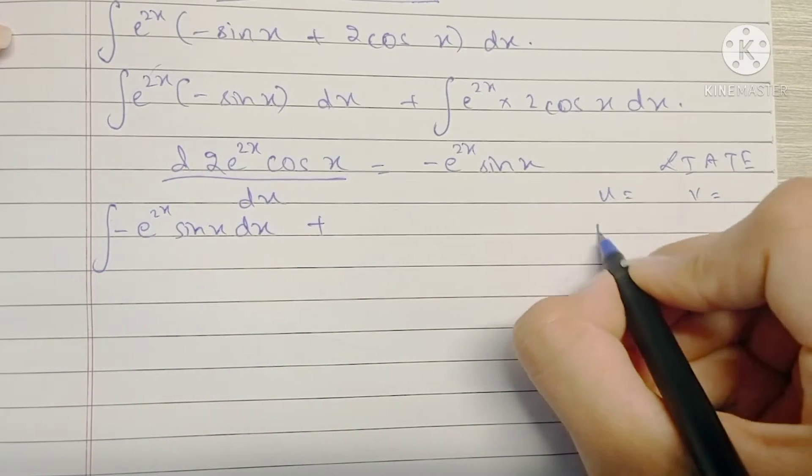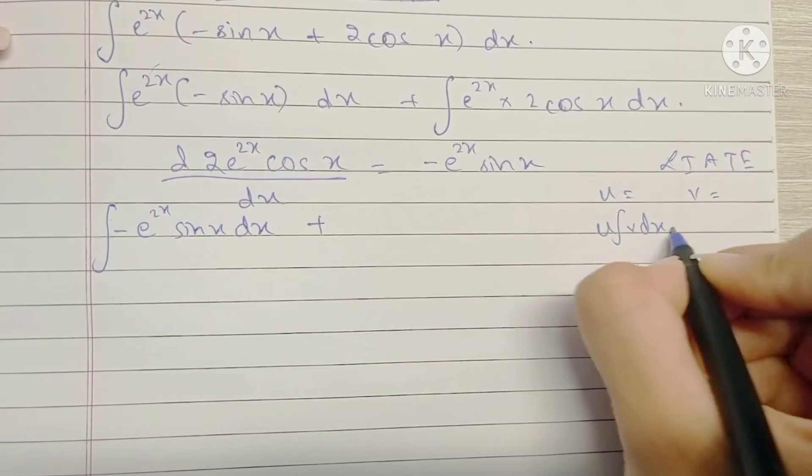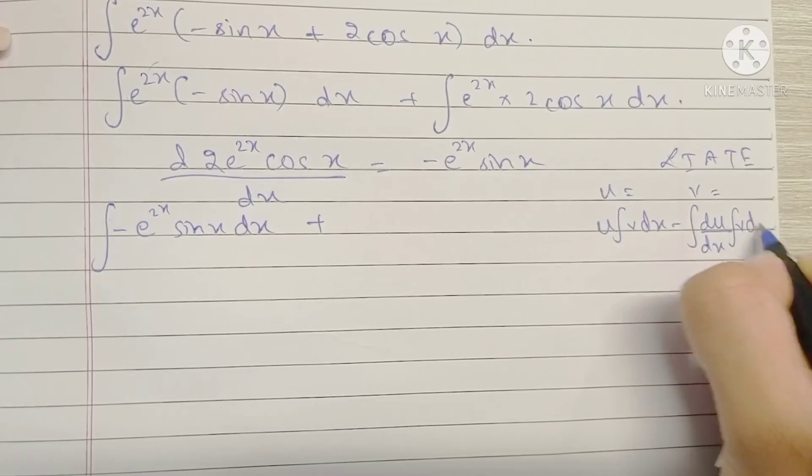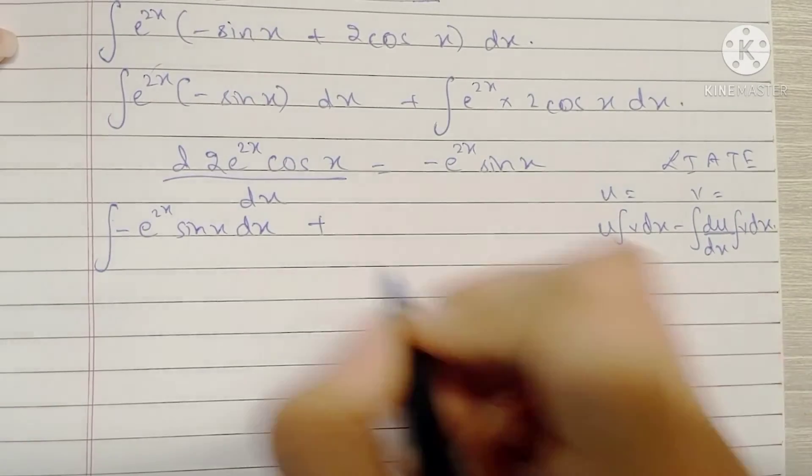So the by parts formula is u into the integral of v dx minus the integral of differentiation of u into the integral of v dx. Okay, so let's start.